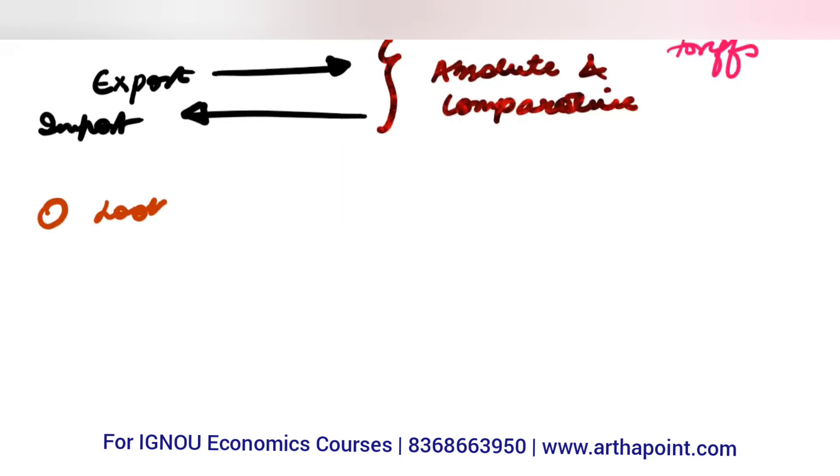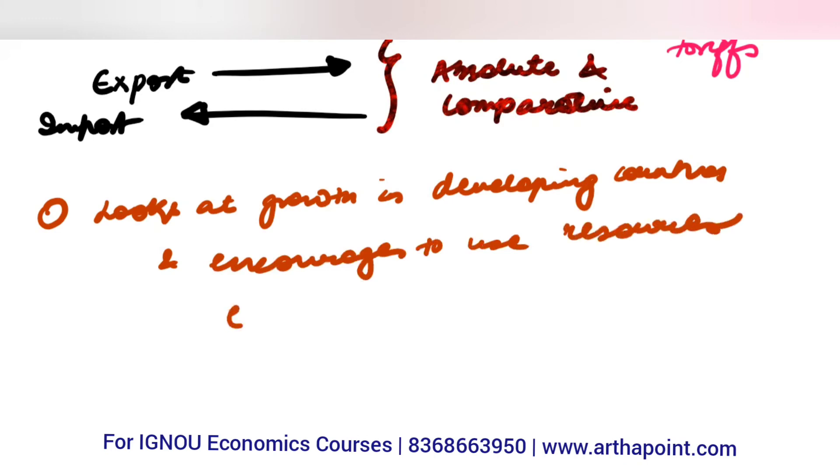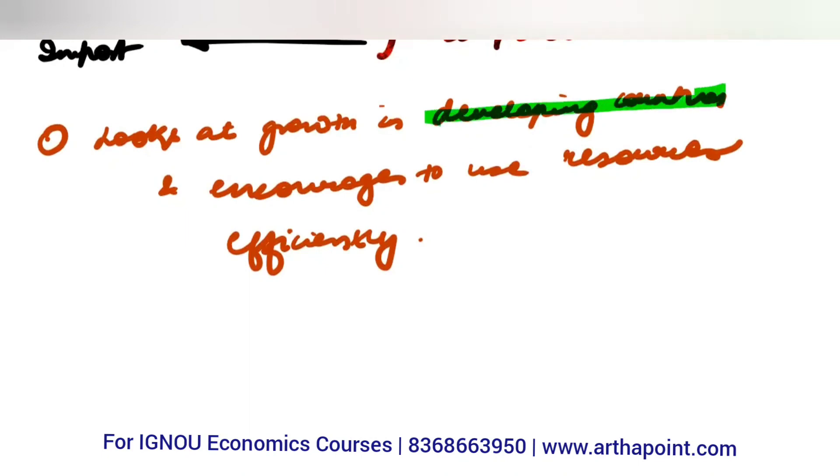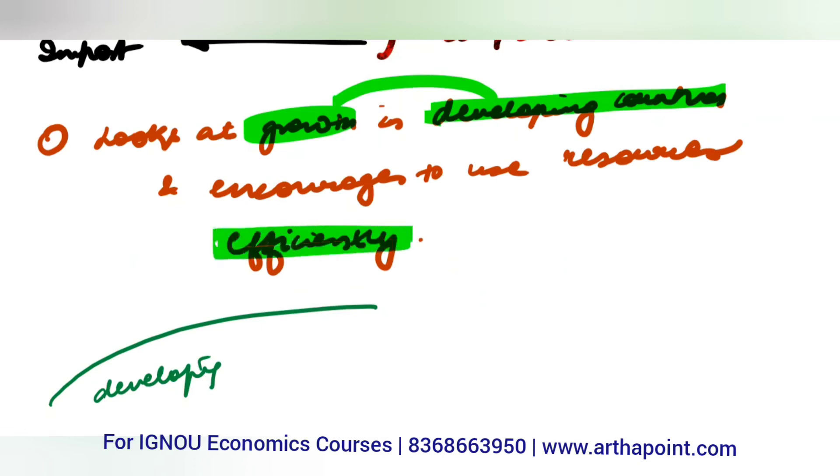Fifth point: Economics looks at growth in developing countries and encourages efficient use of resources. It examines how developing countries are growing, what growth path they are taking, and how they can move towards becoming developed countries. When going from developing to developed, how can resources be used efficiently? That is also part of economics.